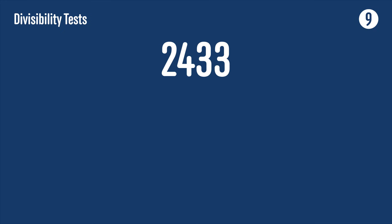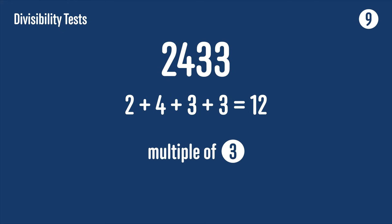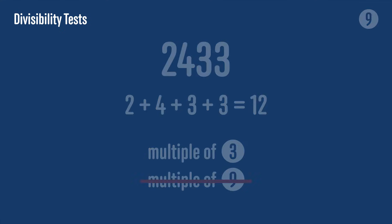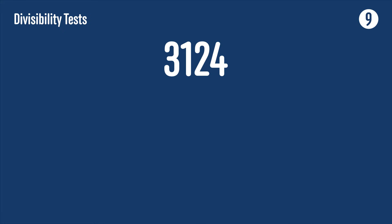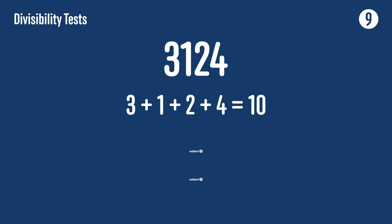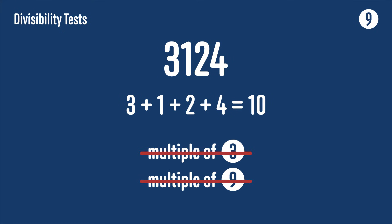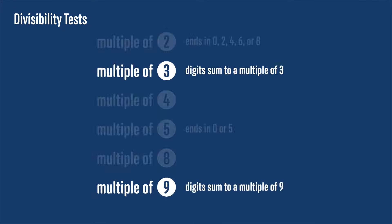Take 2,433: the sum of its digits is 2 + 4 + 3 + 3 = 12. This is a multiple of 3, so 2,433 is a multiple of 3, but 12 isn't a multiple of 9, so it's not a multiple of 9. Now consider 3,124: its digit sum is 3 + 1 + 2 + 4 = 10, which is not a multiple of 3 or 9, so 3,124 isn't a multiple of 3 or 9. Be careful — this trick only works for 3 and for 9; you can't test divisibility by other numbers in this way.